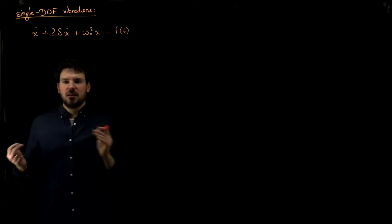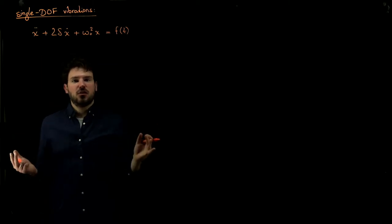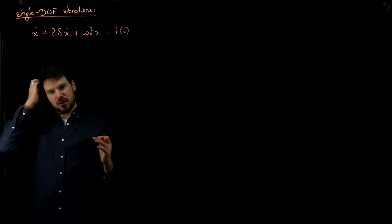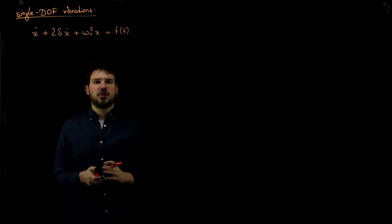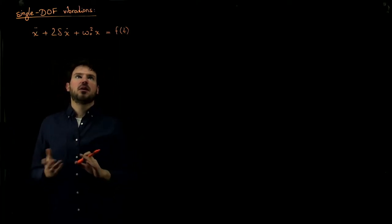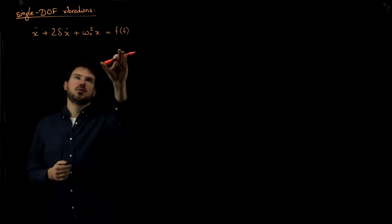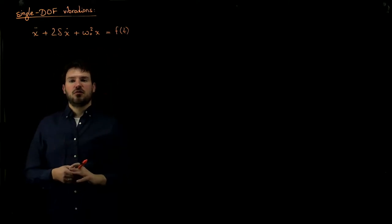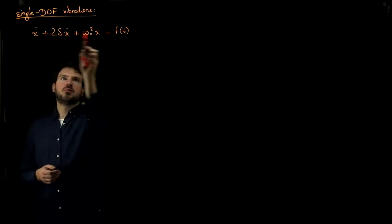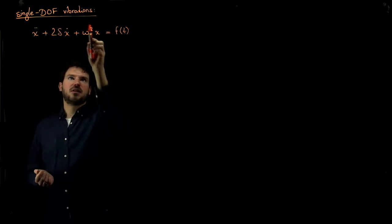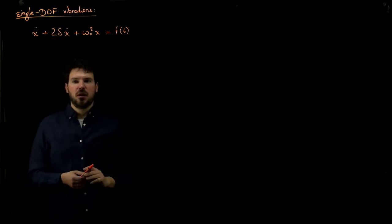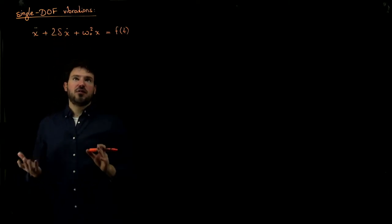Note that x can be anything — it's any generalized degree of freedom. It can be displacement, it can be an angle. Whenever you derive a single degree of freedom equation of motion and linearize it about a stable equilibrium, this is what the governing equation of a vibration should generally look like. The prefactors here can be interpreted as the eigenfrequency of the system and the amount of damping.